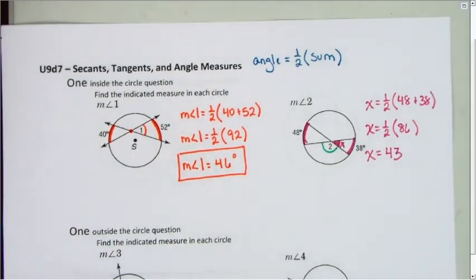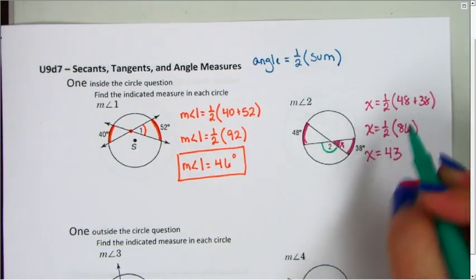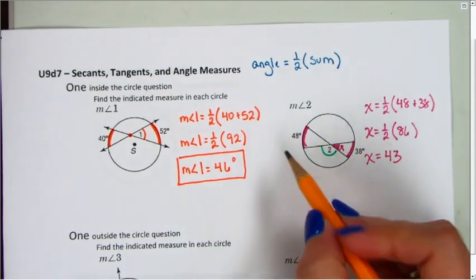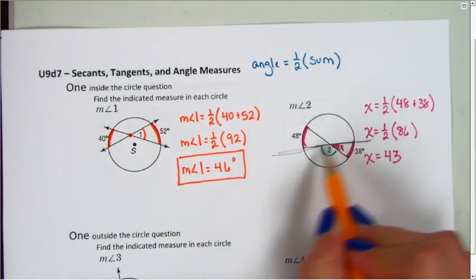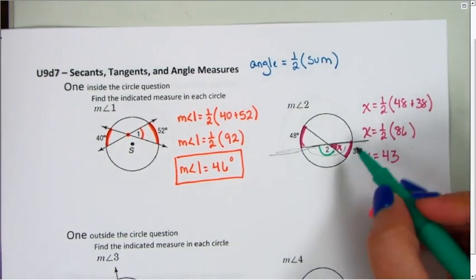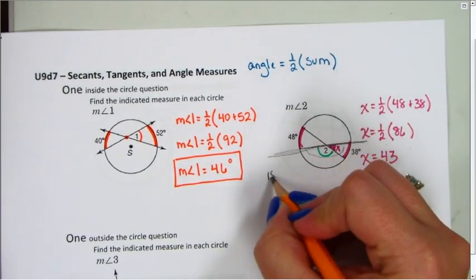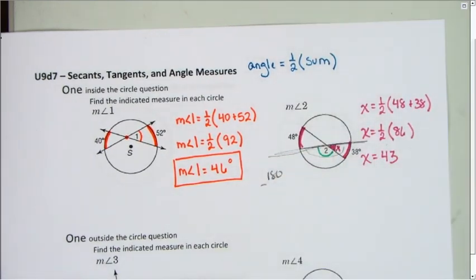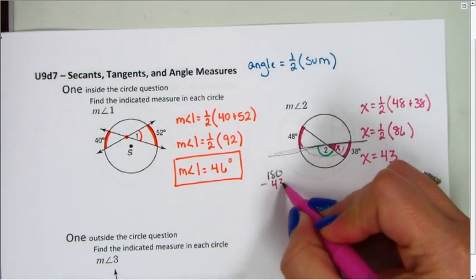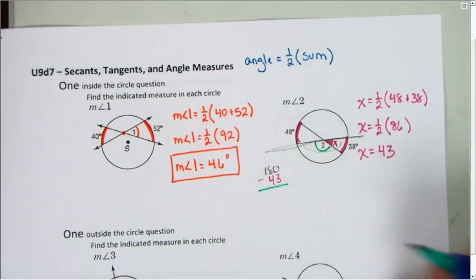Now, that is the pink angle. I want the green angle. To find the green angle, what I need to do is realize that these two together make up this line. It's not a diameter, but it is a line, which means there are still 180 degrees on either side. So if I've used 43 degrees out of my 180, that's going to leave me with the remaining degrees for angle 2.